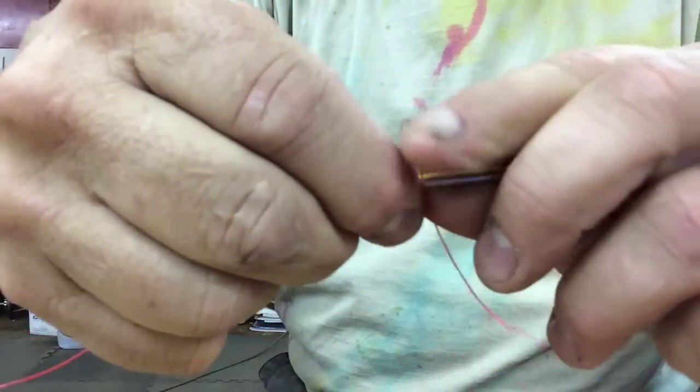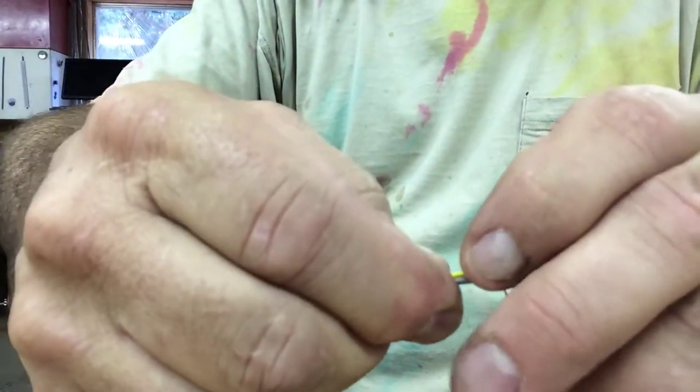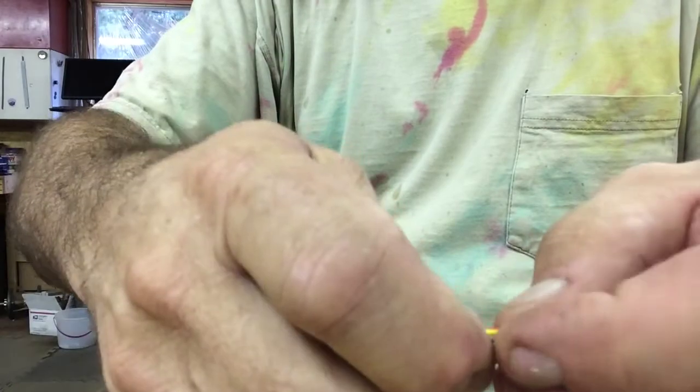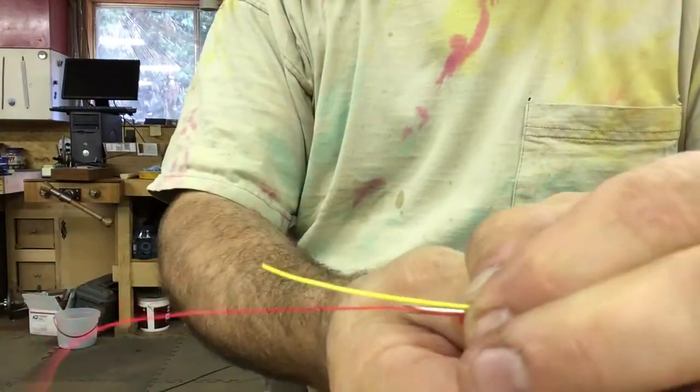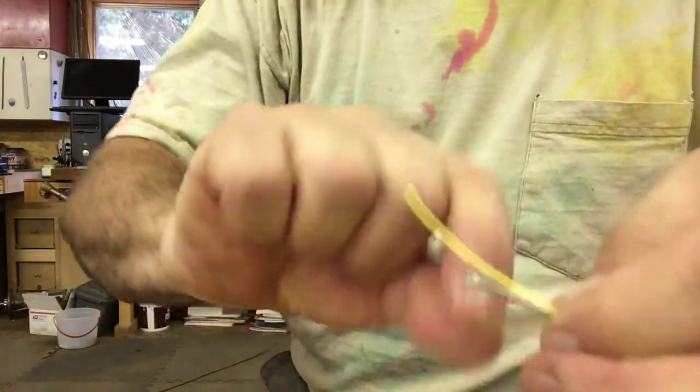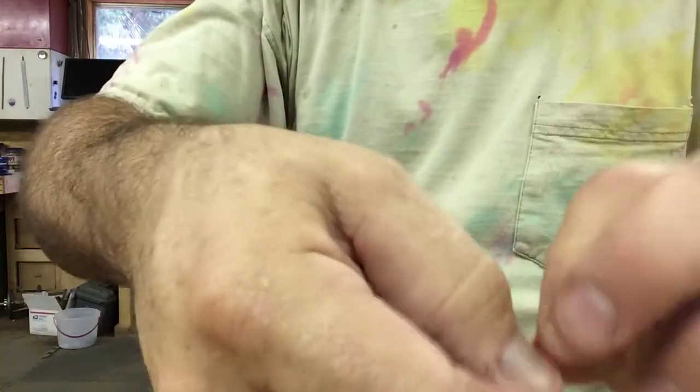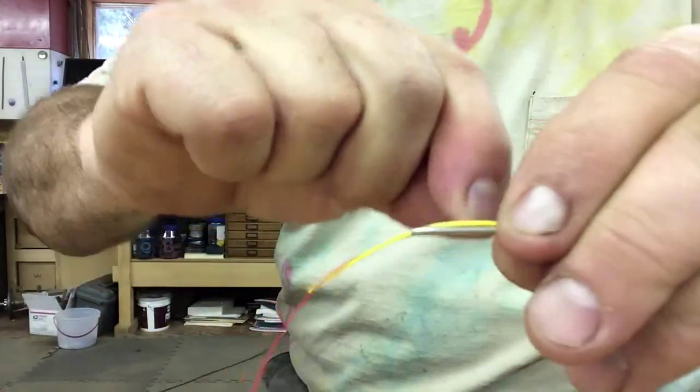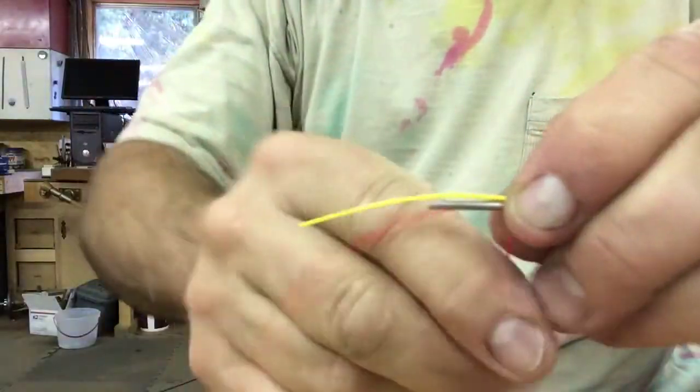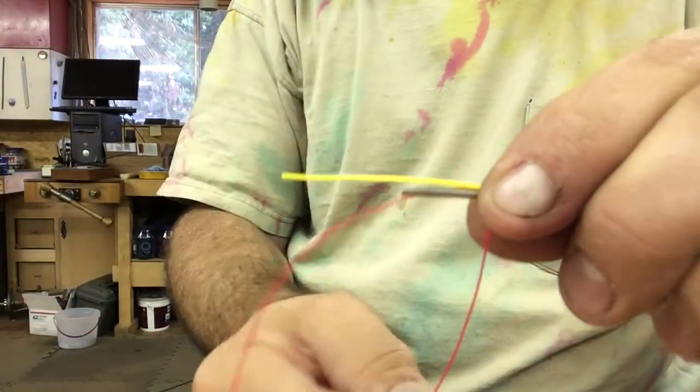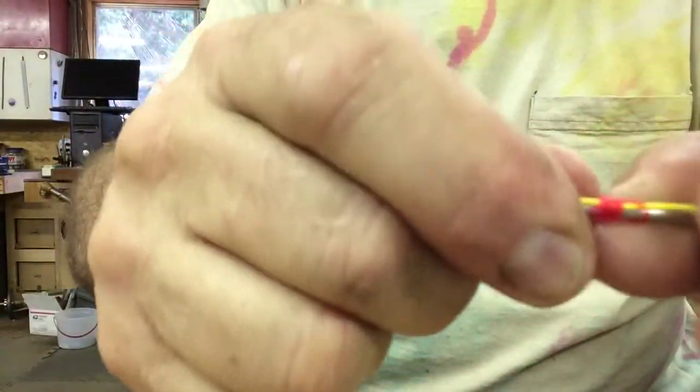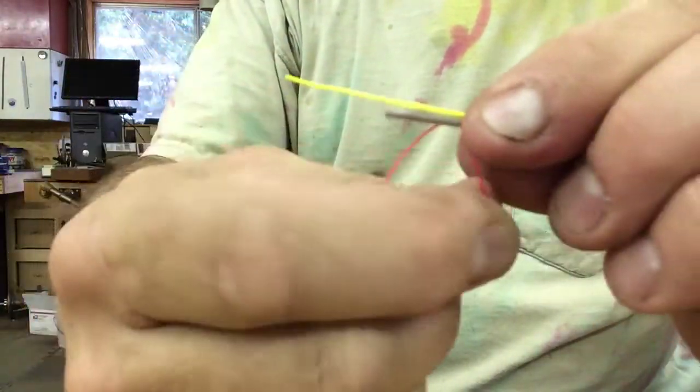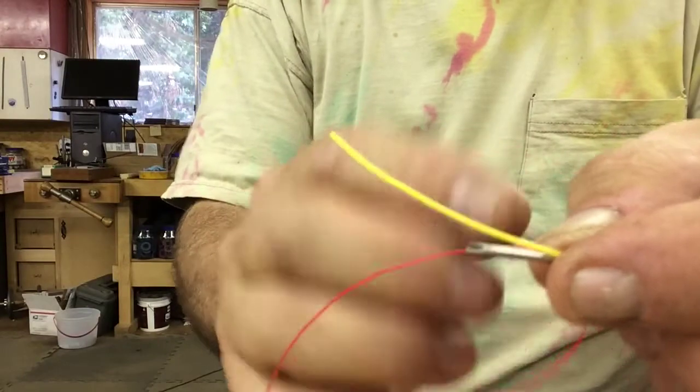Wrap around. Back along itself. Very hard to show this but hard to even get it going sometimes there. Five to six times around. Usually sufficient with this size line. I'll try to show you. Now we're going to stick the tag end of the amnesia back down the tube.